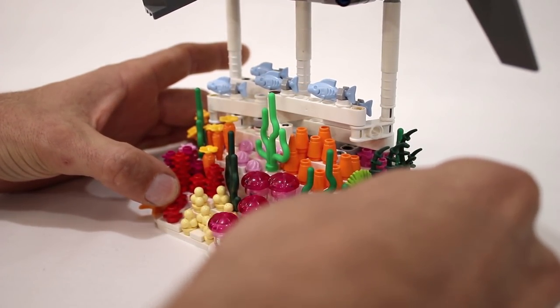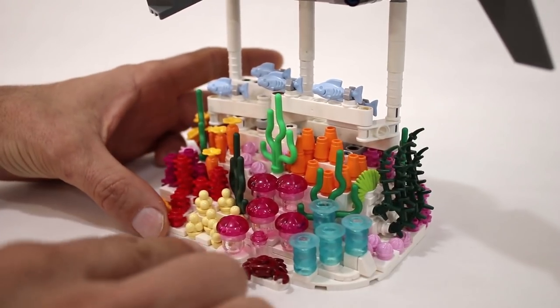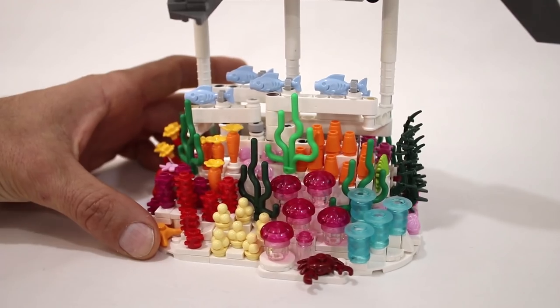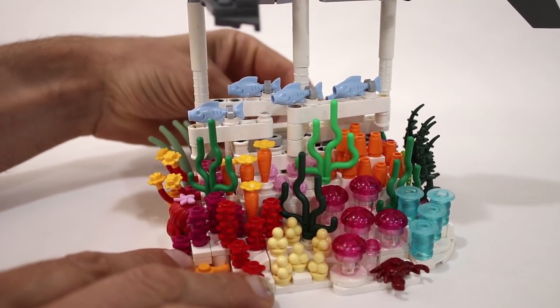I used some old Click-its pieces here to get these kind of tubular plants, and these are old jellyfish from the SpongeBob line of sets. I also added a little school of fish swimming underneath the shark.